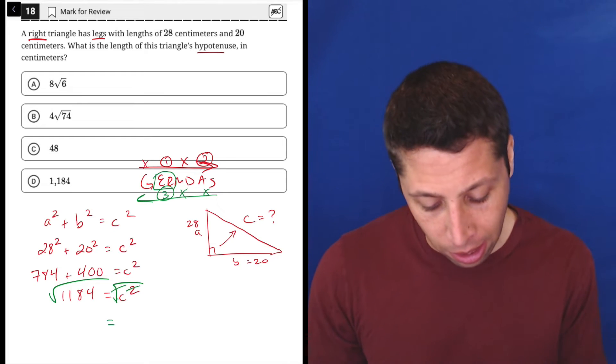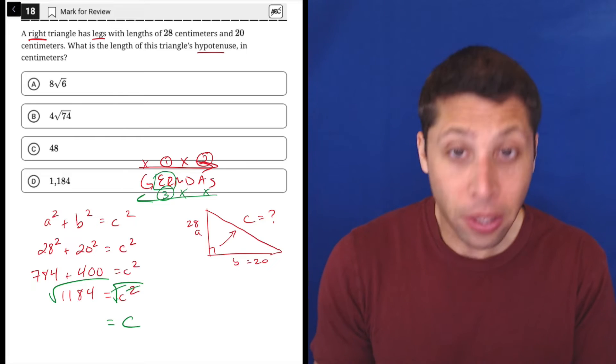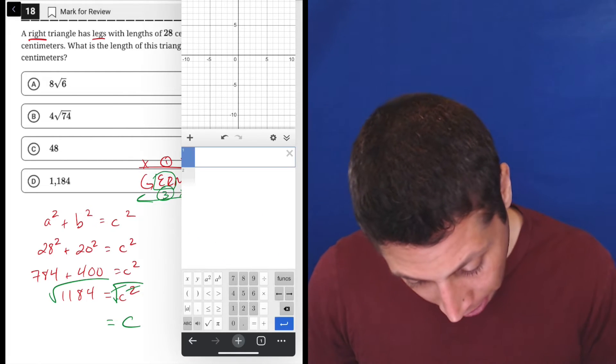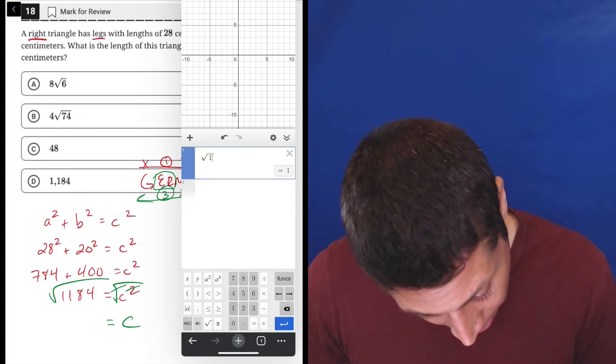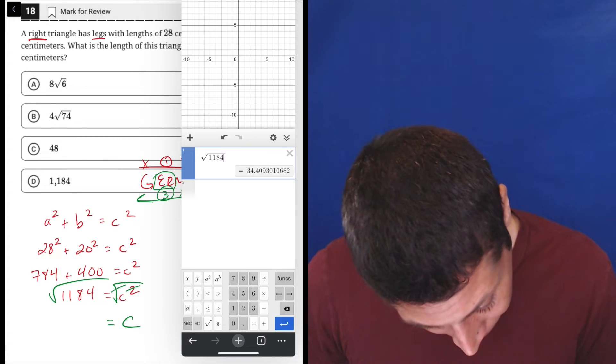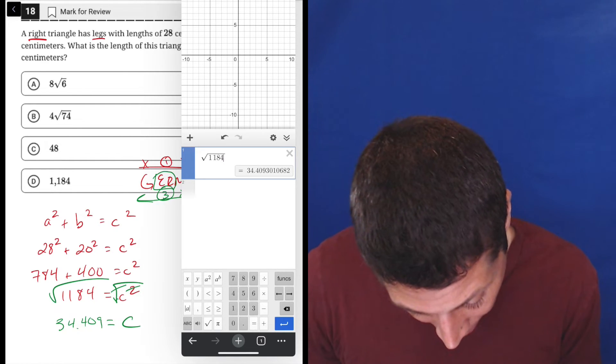So that gets rid of the C squared part, leaves us with just a regular old C. And then I'm going to put this in my calculator. In fact, let me do it in Desmos. You can see, I'm going to do the square root right here of 1184. And it's a messy number, 34.409.